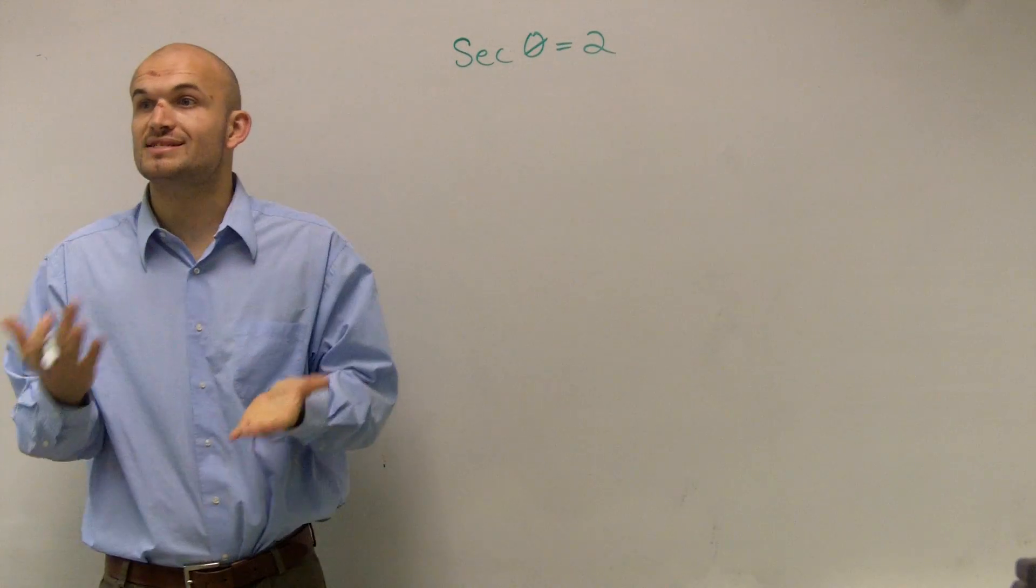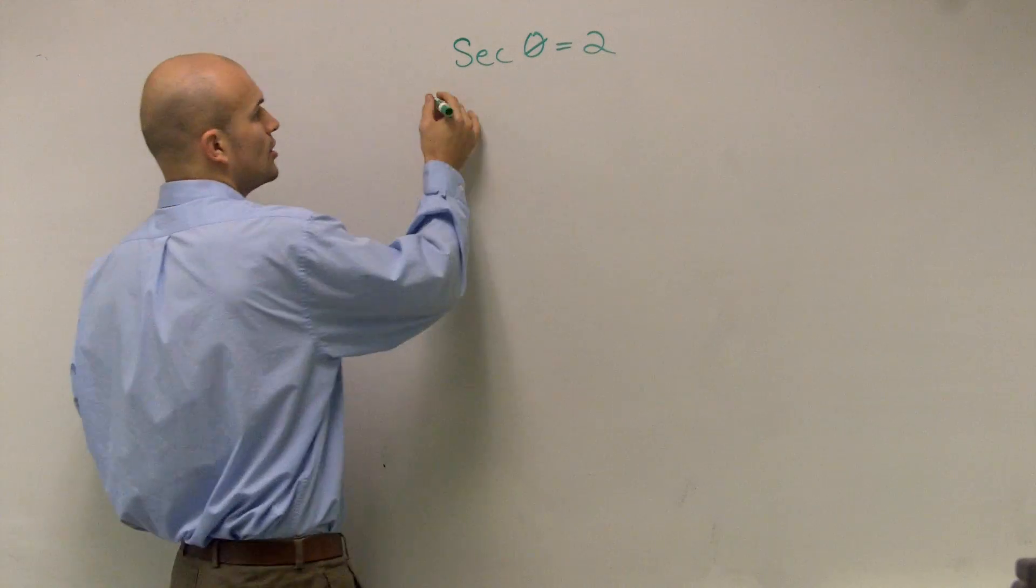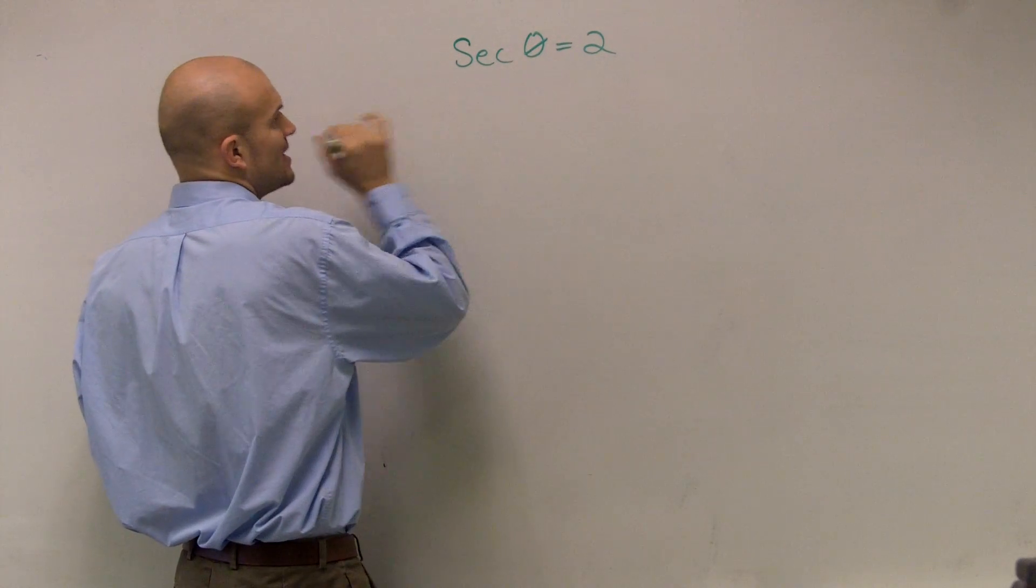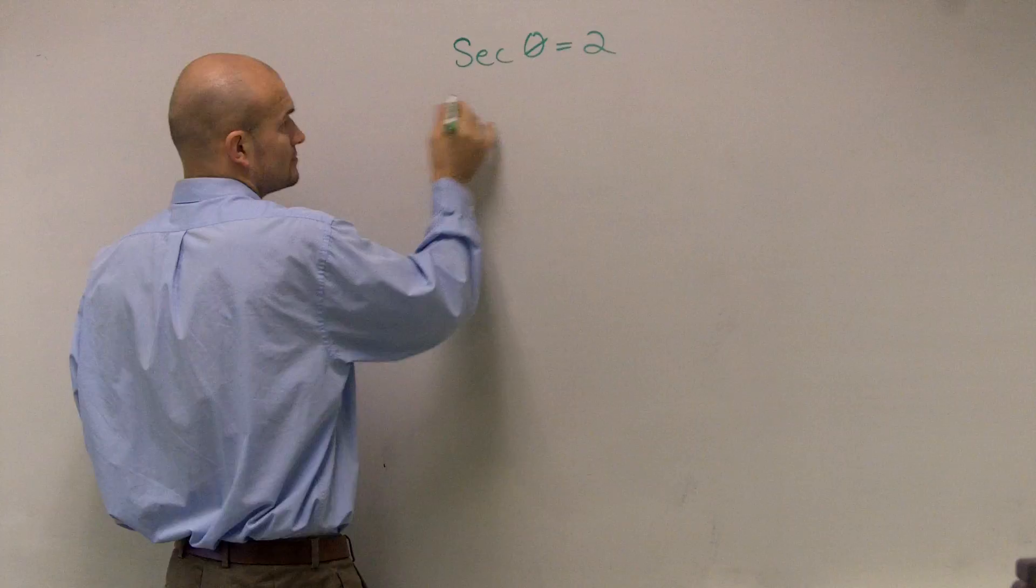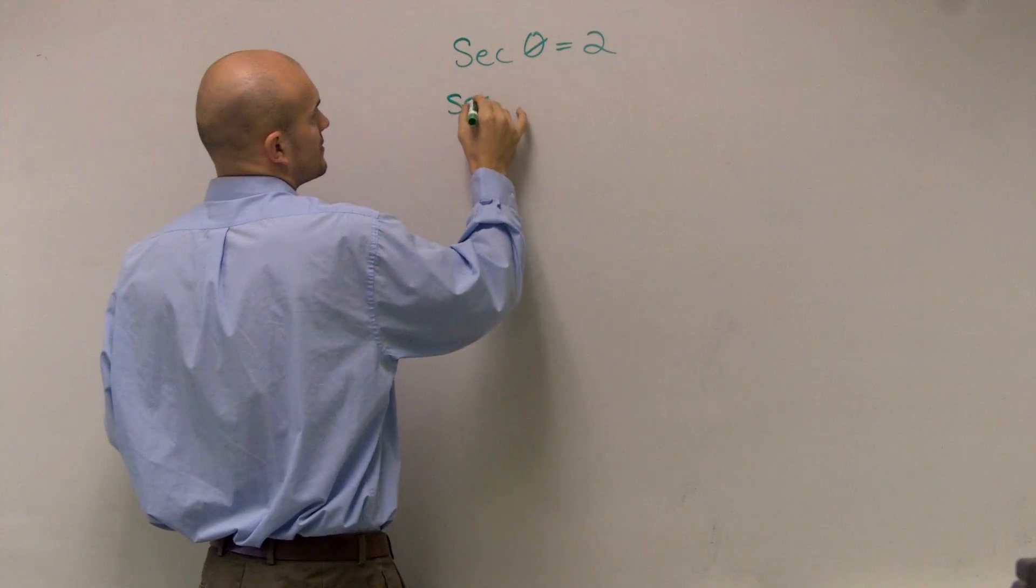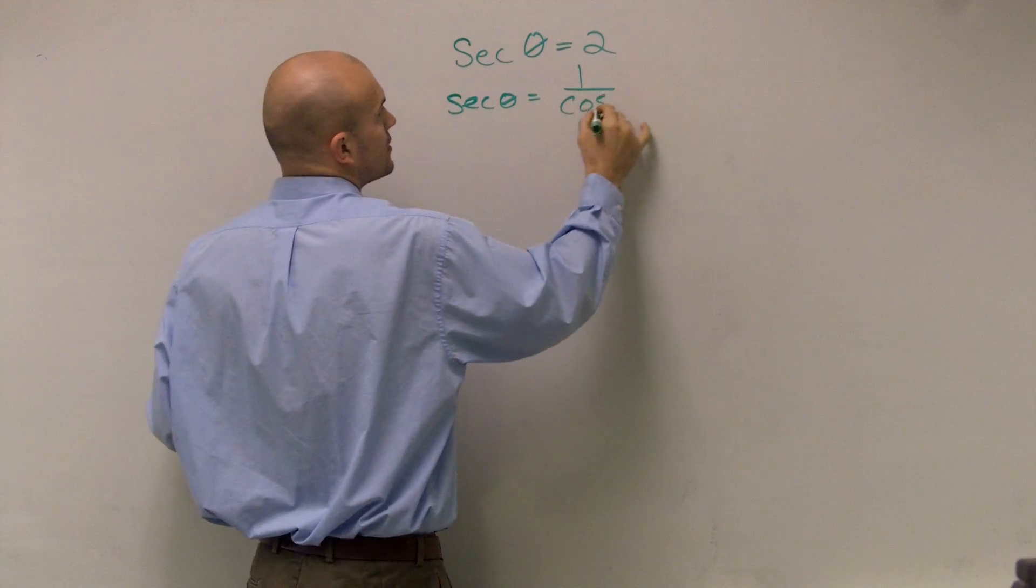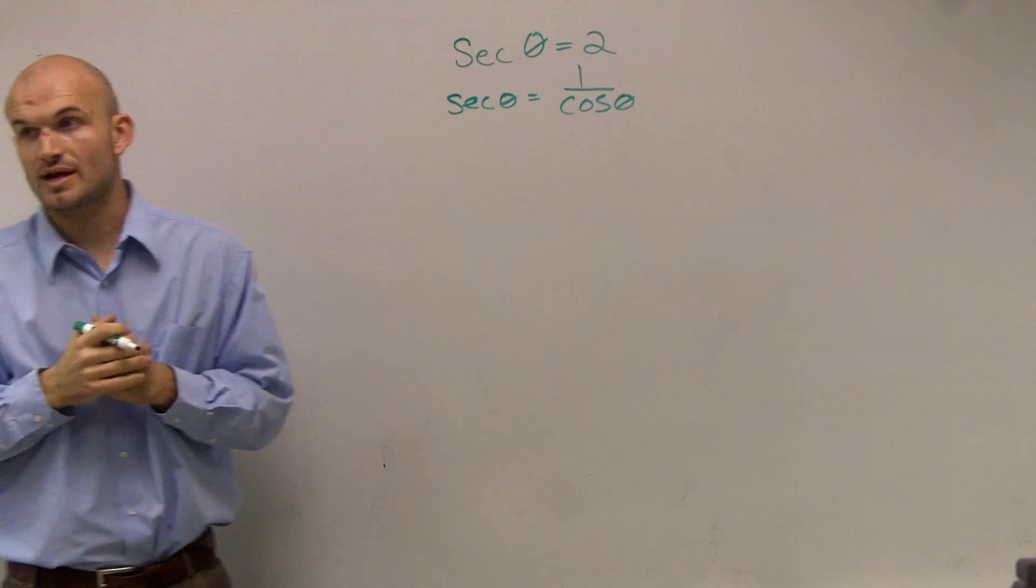First thing we need to understand is what does secant even represent? Those two pages are so important. We can say that secant of theta is the same thing as 1 over cosine of theta.